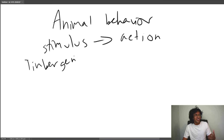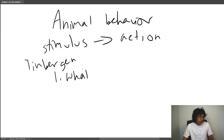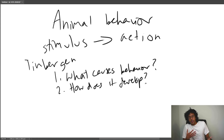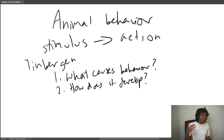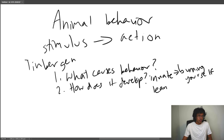First: what causes the behavior — essentially, what's the stimulus? Second: how does it develop — is it something the animal knows instinctively, or something learned over time? For example, the reflex to pull your hand away from a hot stove is not something you learn; you just automatically do it because it hurts. Those are called innate behaviors — stuff you already have. Then there are learned behaviors, like learning how to use Photoshop — a baby doesn't know that, but you learn it over time.